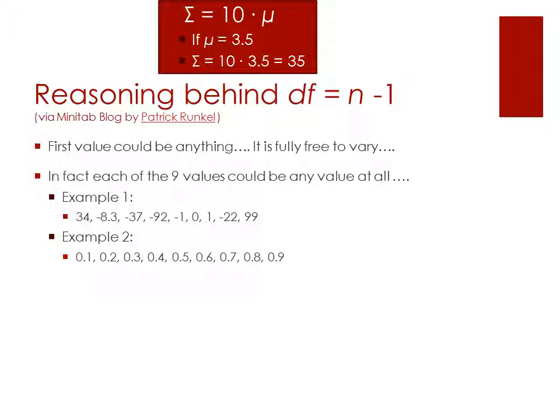So example one, which has a range from negative 92 up to positive 99, that example is on track, that it could wind up meeting our criteria of having a sum of all the values equaling 35. Similarly, example number two, we're working with very small decimal points, very small values all the way across. It also could potentially meet our final criteria of having a sum of 35.